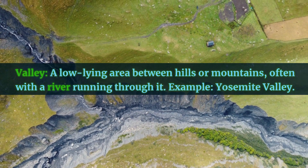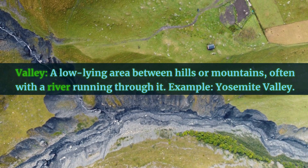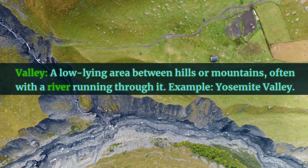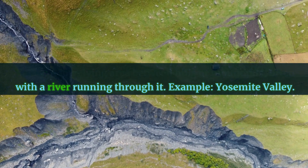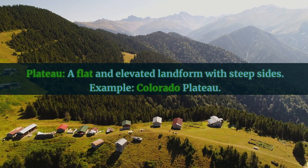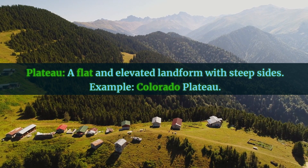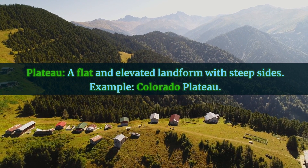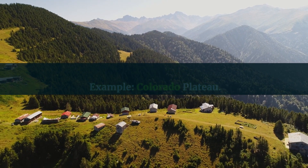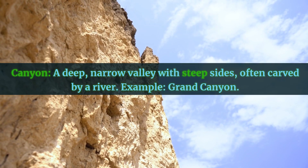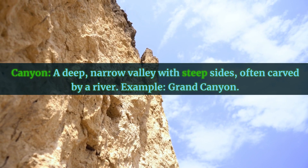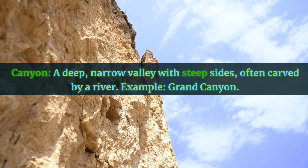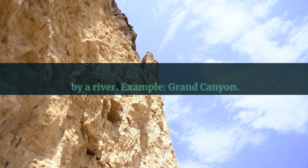Valley: a low-lying area between hills or mountains, often with a river running through it. Example: Yosemite Valley. Plateau: a flat and elevated landform with steep sides. Example: Colorado Plateau. Canyon: a deep, narrow valley with steep sides, often carved by a river. Example: Grand Canyon.